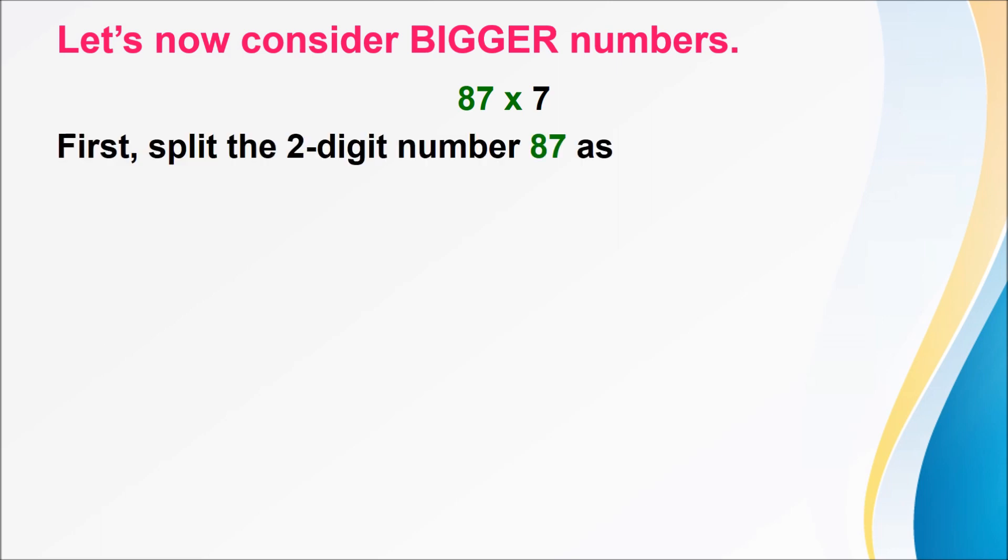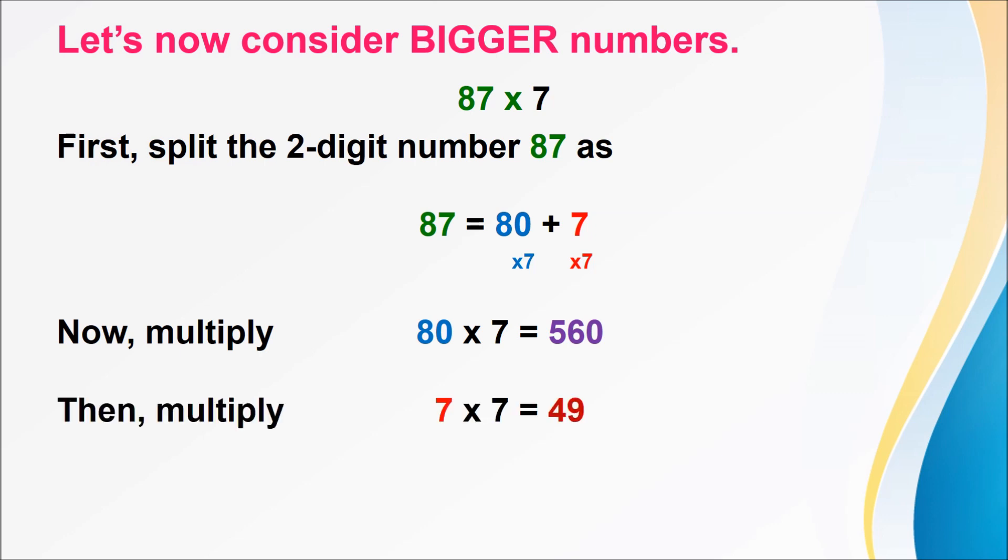Now, let's consider a bigger 2-digit number. Say, 87 and multiply it by 7. As shown before, split 87 as 80 plus 7. Next, multiply 80 into 7 is equal to 560 and then multiply 7 into 7 which is equal to 49. Finally, add 560 and 49 to get the answer as 609.